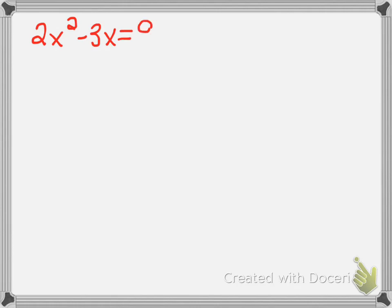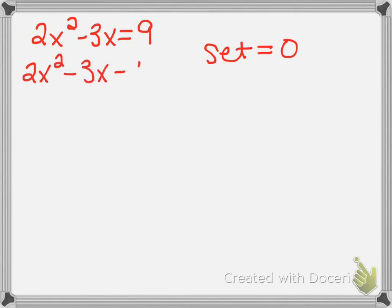So if I asked you to solve this equation by factoring, the first thing that you would need to remember is that factoring requires that your equation is set equal to zero. So what you would need to do is subtract the nine to move it to the left side, and now it's set equal to zero.